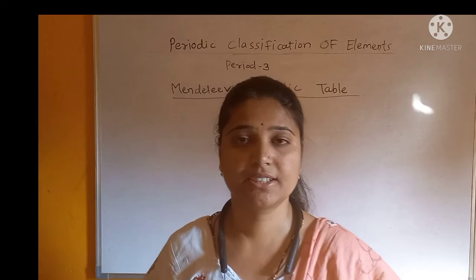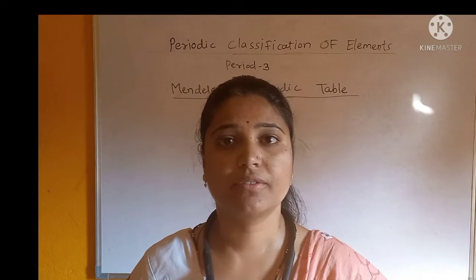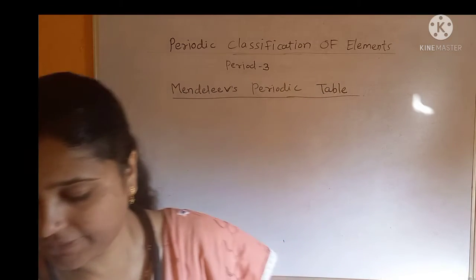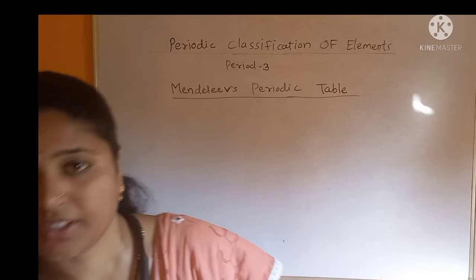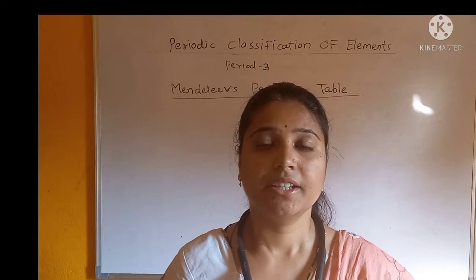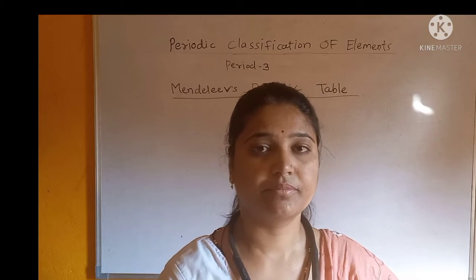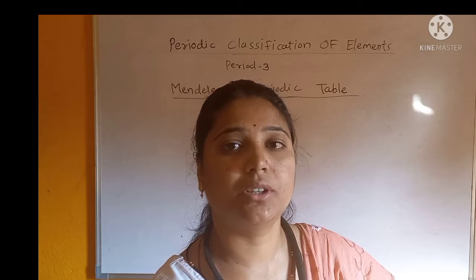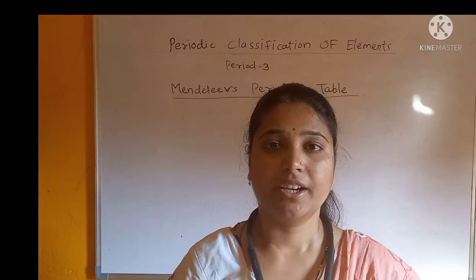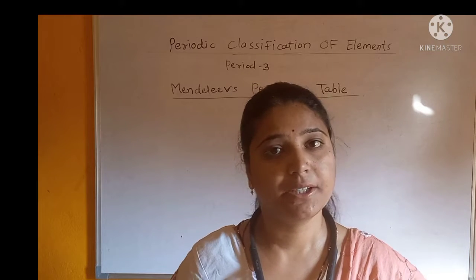Mendeleev was a Russian scientist. In the period of 1869 to 1872, he did a lot of study regarding the periodic table and gave some arrangement.